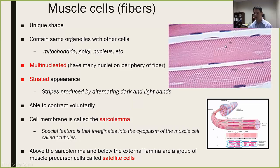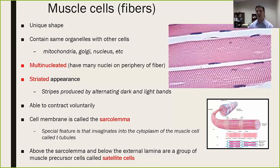The proteins produce a nice striped appearance. Looking at these under a microscope — and I've spent lots of hours looking at muscle under a microscope — they look exactly like this: nice, pretty striated muscles produced by alternating light and dark bands. They are able to contract voluntarily, which is a pretty awesome thing — our brain can send an electrical signal down to our muscles and tell them to contract, which is different from all the other muscle types.